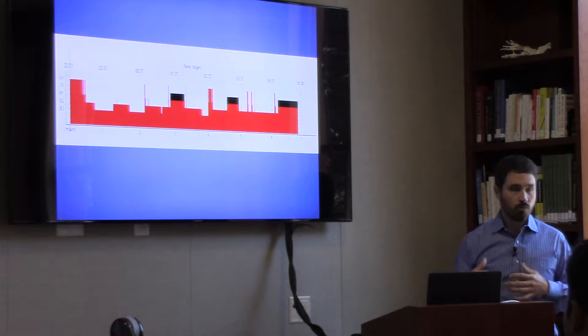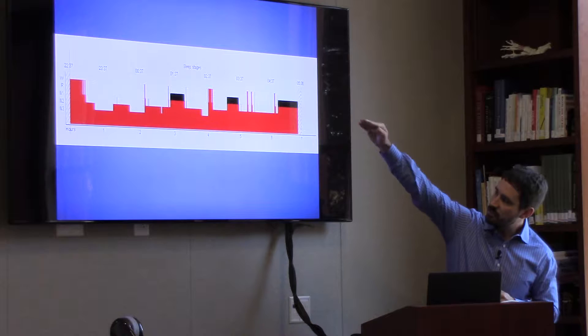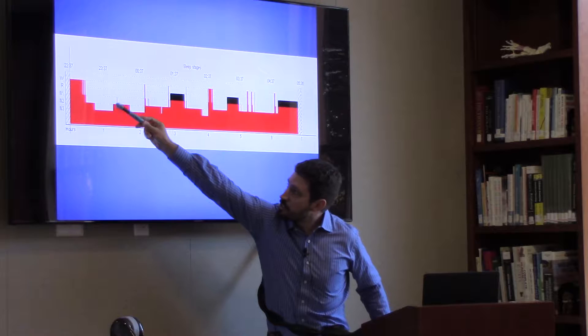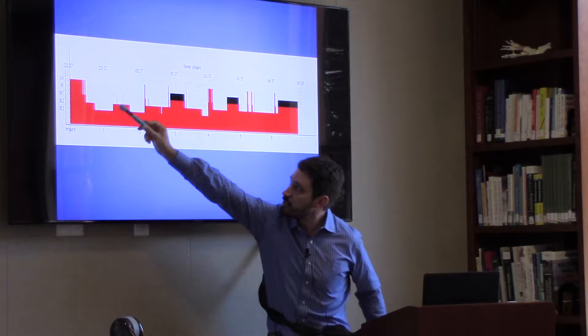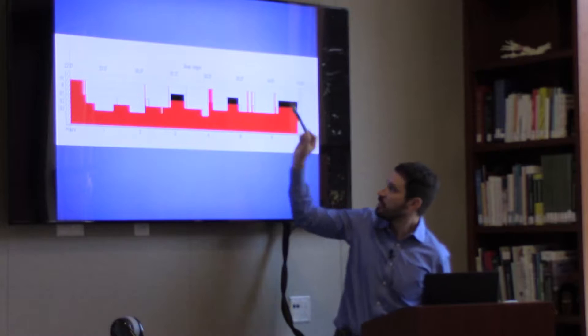Why would it matter what stage of sleep you're in? This is a snapshot of a normal night's sleep. You can see wake at the top to begin the night. The patient then goes into deeper sleep — stage two and three, so non-REM sleep. They cycle up and down with some brief wake-ups, which is normal, between stage two and three sleep, and then they go into REM sleep or dream sleep, shown by these black bars. That cycle usually goes on and off about every 90 minutes in anyone — that's sort of normal sleep.